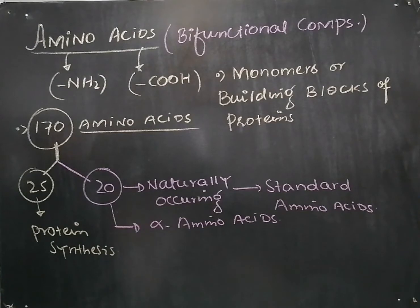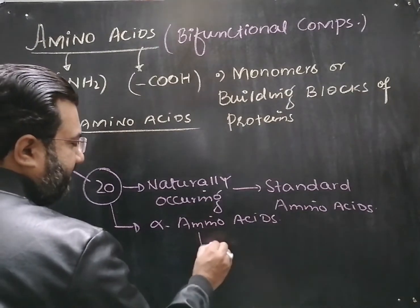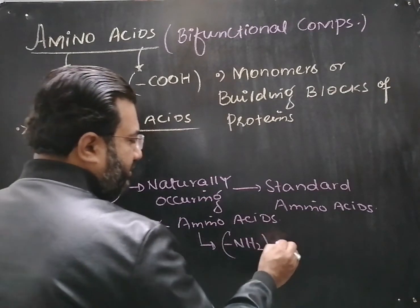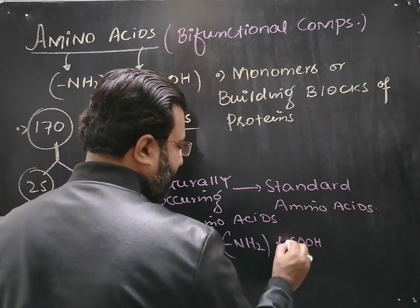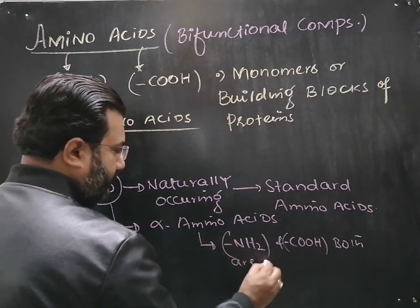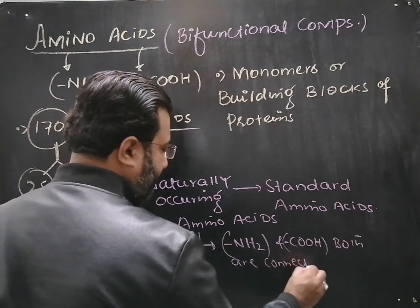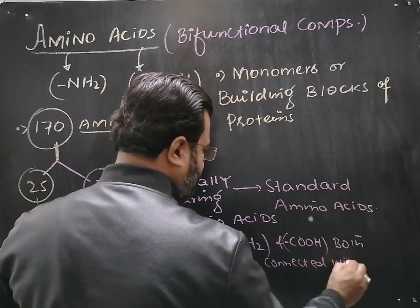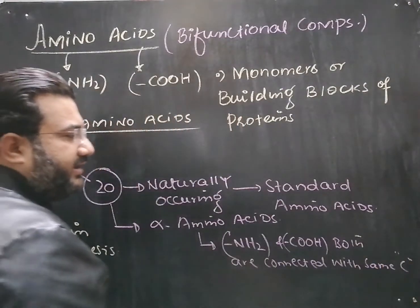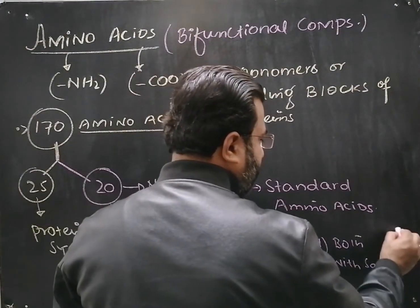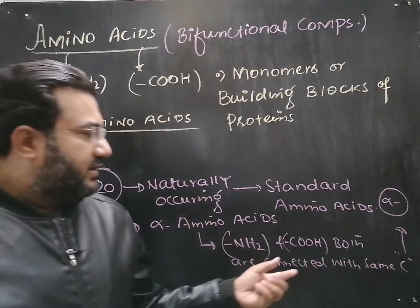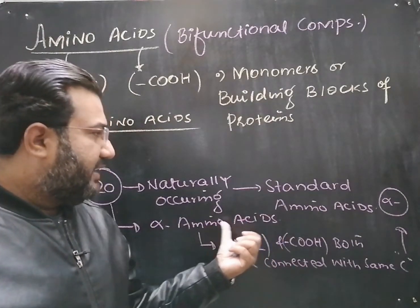These 20 naturally occurring amino acids are all alpha amino acids. Alpha amino acids are those amino acids in which the basic amino group and acidic carboxyl group are both connected or bonded with the same carbon. That carbon to which both these groups are bonded is called the alpha carbon. So, all these 20 amino acids are alpha amino acids.